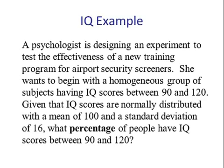A psychologist is designing an experiment to test the effectiveness of a new training program for airport security screeners. She wants to begin with a homogeneous group of subjects having an IQ score between 90 and 120. Given that IQ scores are normally distributed with a mean of 100 and a standard deviation of 16, what percentage of people have an IQ score between 90 and 120?